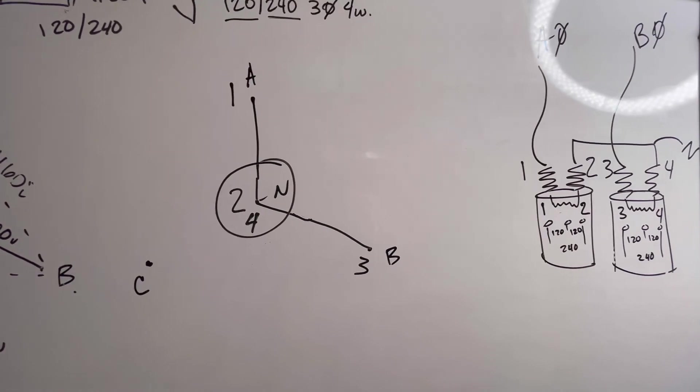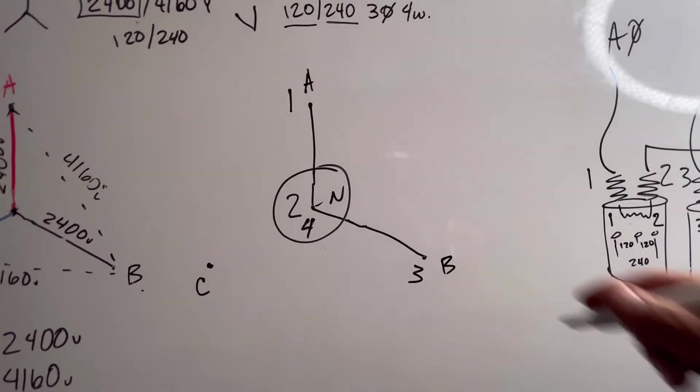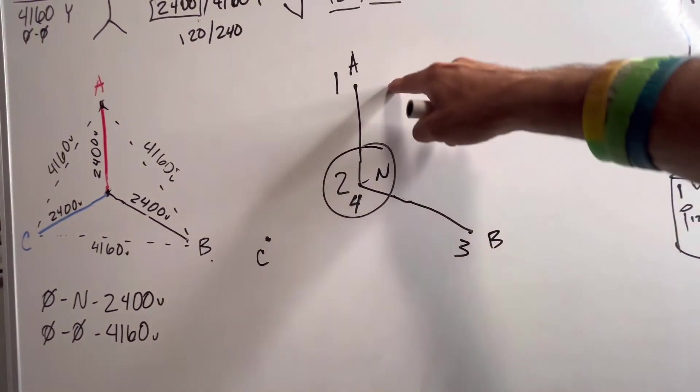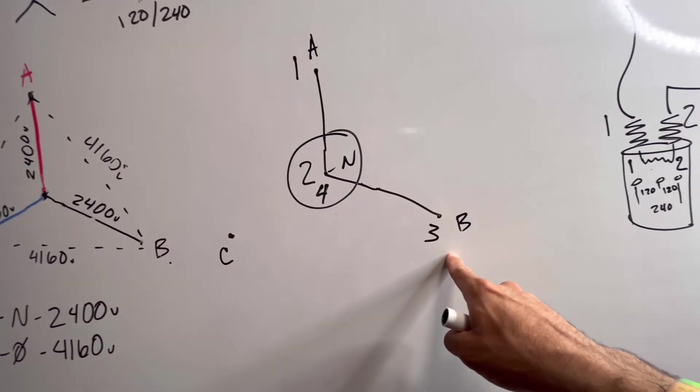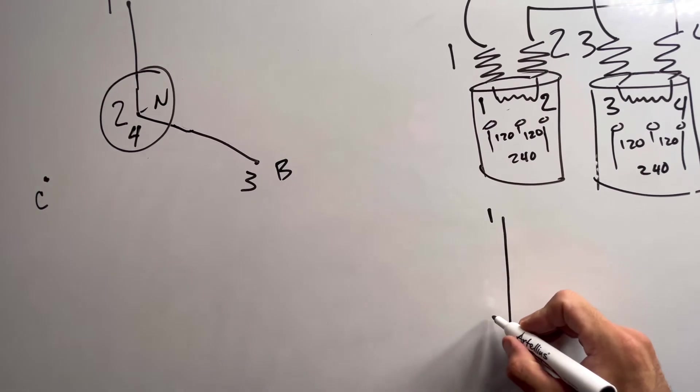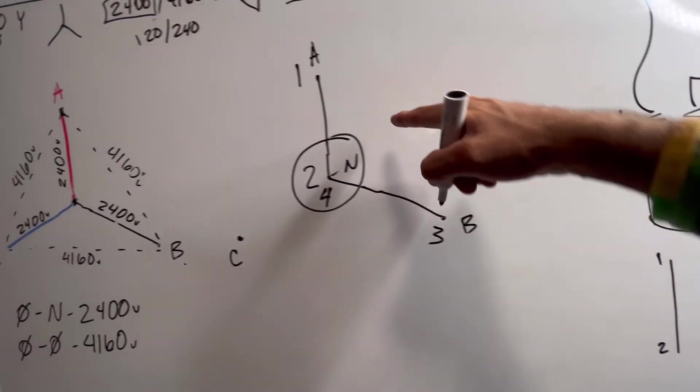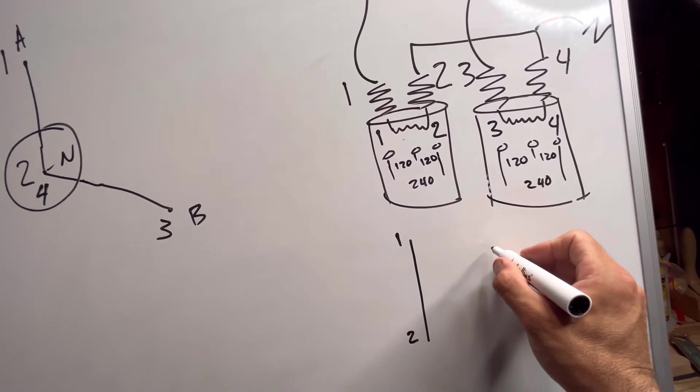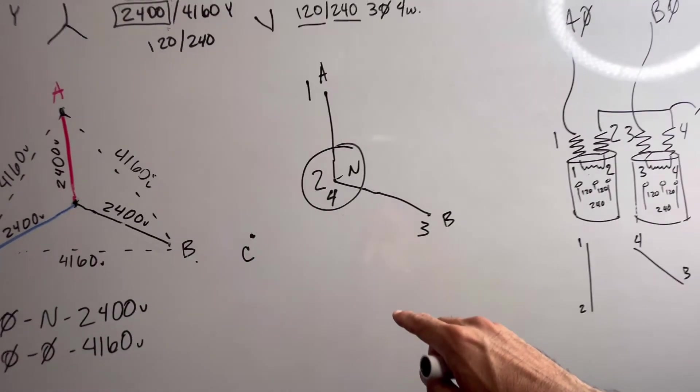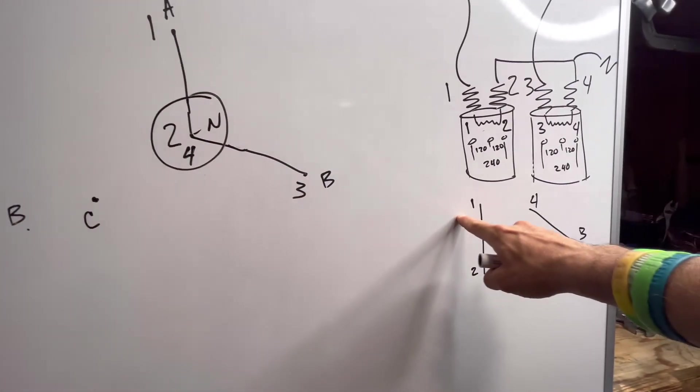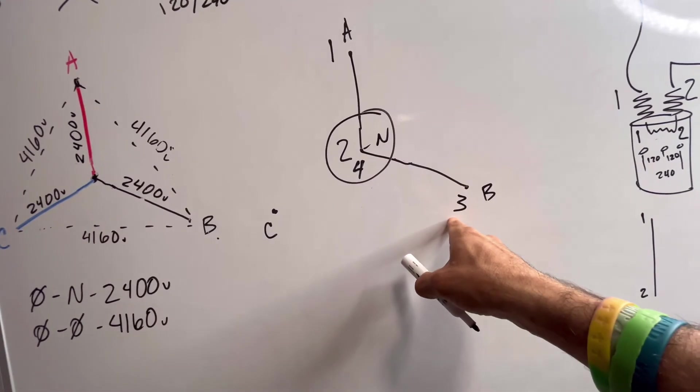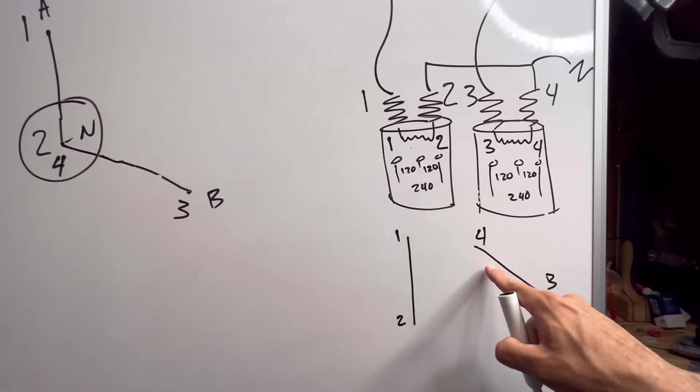Next, we have to vector out our secondary. And the two phase angles that we have to deal with are the same two phase angles that we generated on our primary side. So as soon as we hooked my one, two transformer up off of my A phase and my three, four transformer up off of B phase, I created two separate phase angles on my secondary side. So my secondary phase angle now is matching my primary on both my one, two transformer and my three, four transformer. Notice my primary and my secondary match. One is on top, four is on top.